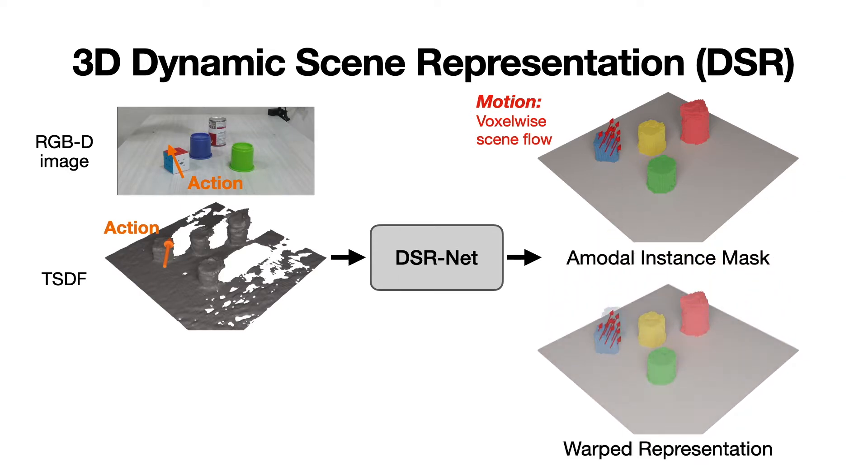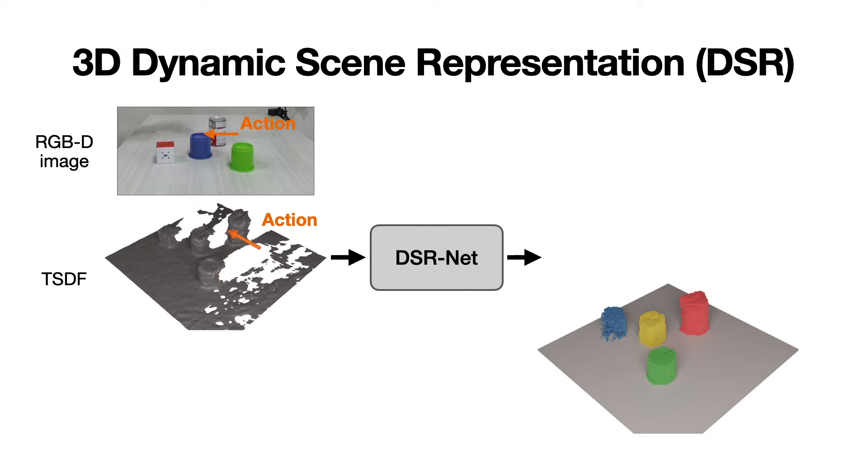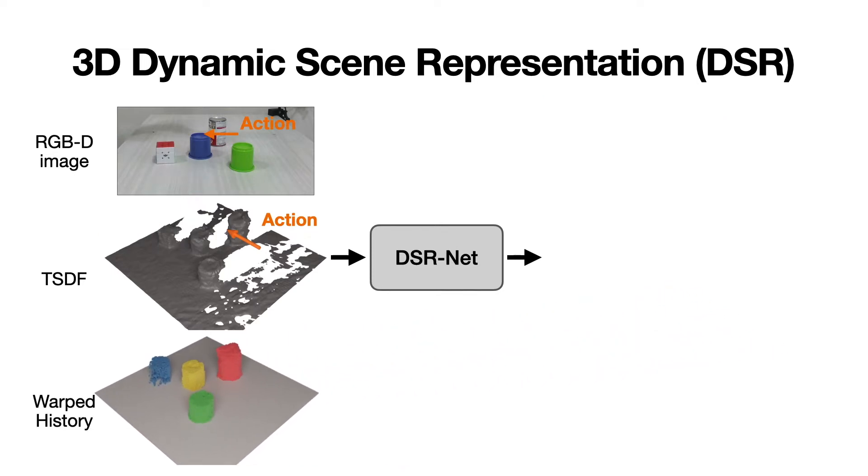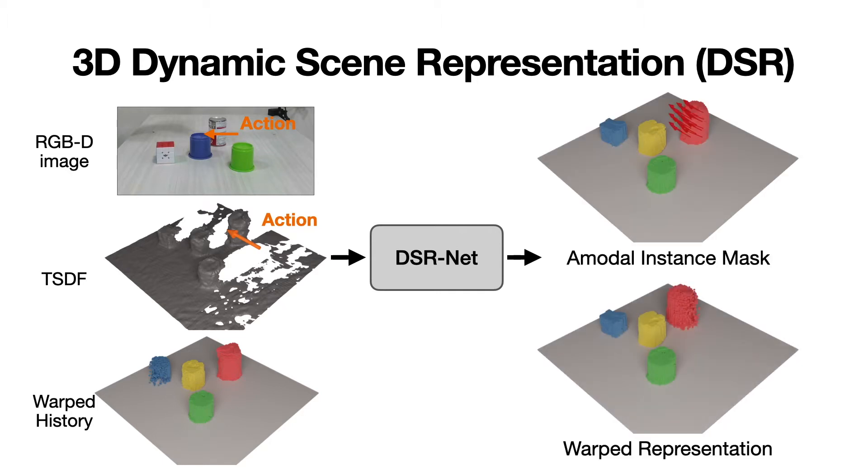The network then warps the scene representation with the predicted scene flow to produce spatially aligned features for aggregation. In the next interaction step, the warped representation is combined with the new action and observation of the scene for predicting the next object motion.